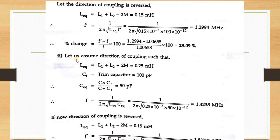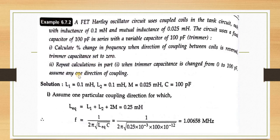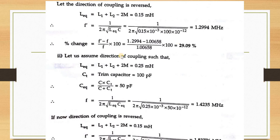For the second part: repeat the calculation considering the trimmer capacitance changed from 0 to 100 pF. Now the equivalent capacitance is C·Ct/(C+Ct) = 50 pF. Substituting all values gives F = 1.4235 MHz for the first coupling direction.